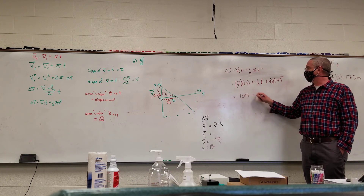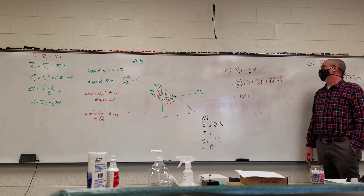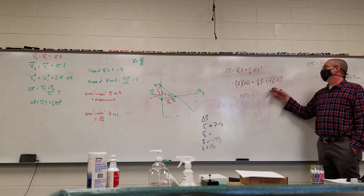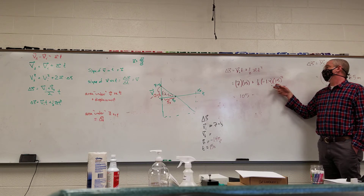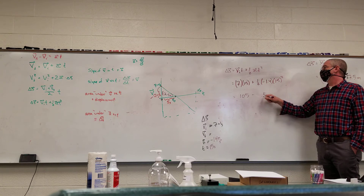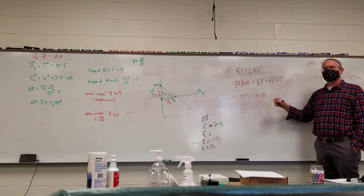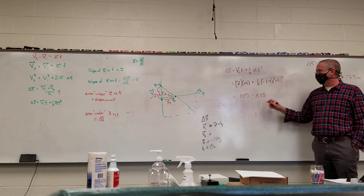Working through the arithmetic: 7*15 = 105, and ½*(-1.4)*225 = -157.5, giving a displacement of 105 - 157.5 = -52.5 meters.